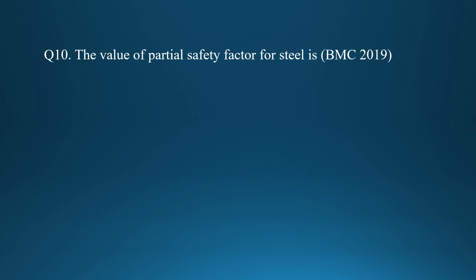Question nine: the value of partial safety factor for steel is 1.15 — option B is correct. For concrete, the partial safety factor is 1.5. Since steel has greater strength than concrete, steel has a lower partial safety factor and concrete has a higher one.